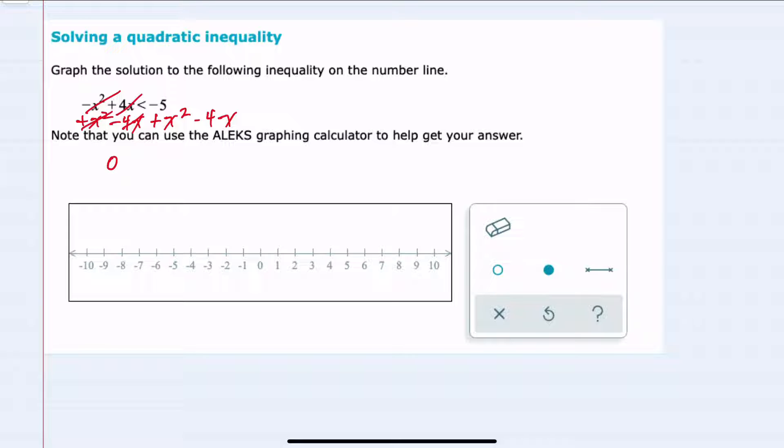On the left hand side then everything would cancel leaving me zero. I've only been adding and subtracting so the direction of that inequality stays the same. On the right hand side, if I were to put all of these in descending order, I have x squared minus 4x minus 5.